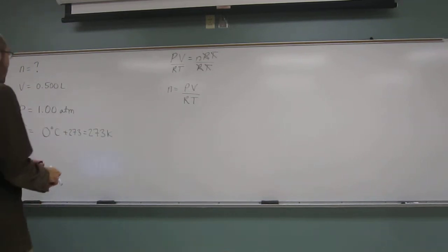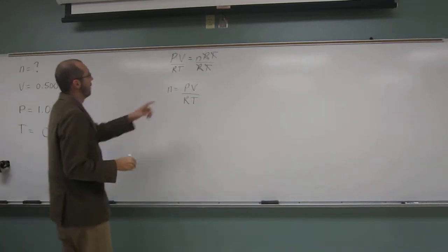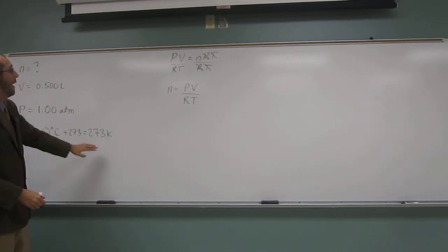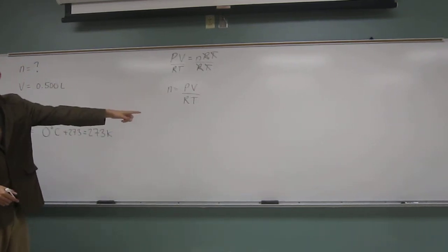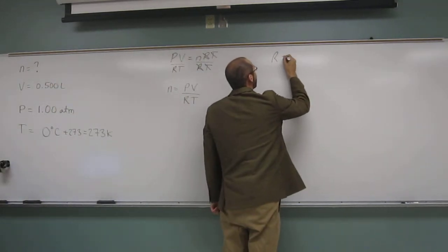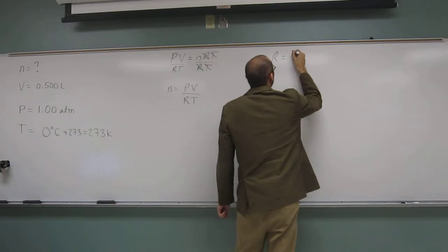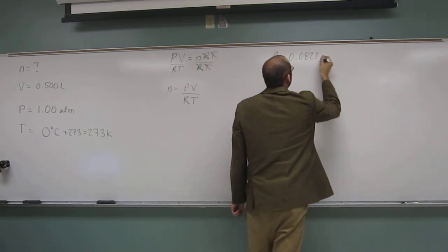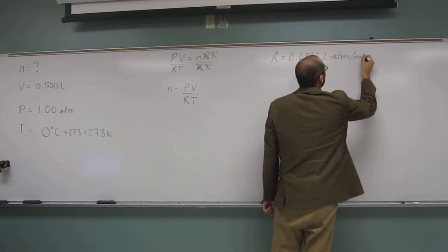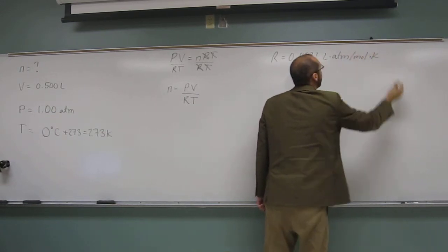So, in order to do this problem, we have P, we have V, we have T, R. Where does that come from? It's a constant. Yeah, that's the ideal gas constant, and I have to give that to you. 0.0821 liters ATM per mole Kelvin, okay?